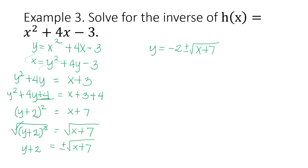Let us check if this is really the inverse of h(x). Suppose x is negative 1. Then y equals negative 2 plus square root of 6, and there is another answer: negative 2 minus square root of 6. Since for one x value there is more than one y value, that means this function has no inverse.